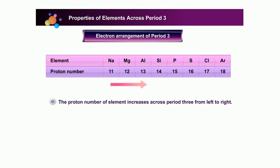The proton number of elements increases across period 3 from left to right. The proton number increases by one unit from one element to the next element across the period.